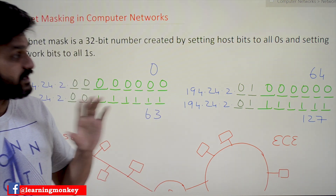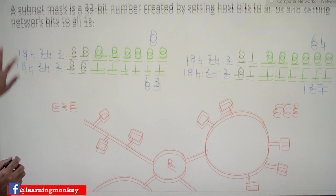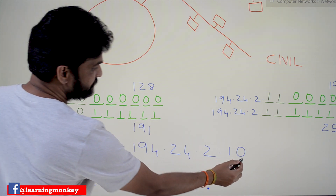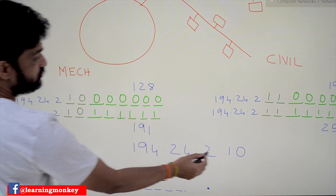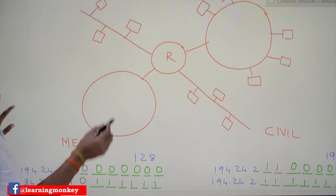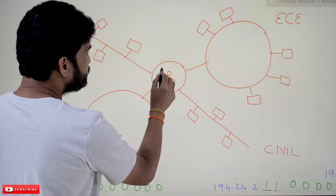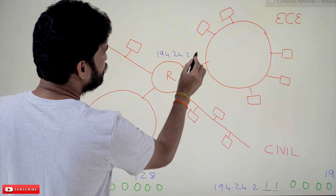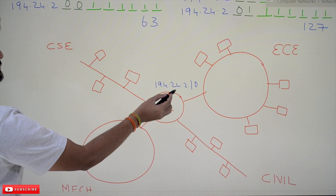To understand why we need a subnet mask, we will consider an example already discussed in our previous video. We have a message arriving from the external world to a system with IP address 192.24.2.10. This network was created by a university, and the router has to decide where this system is located.